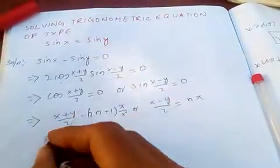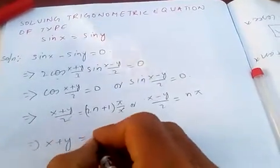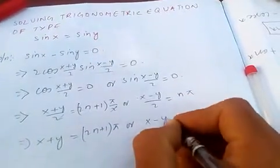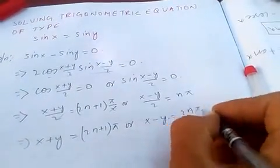The 2 can cancel out, so x plus y equals (2n+1)π, or x minus y equals 2nπ.